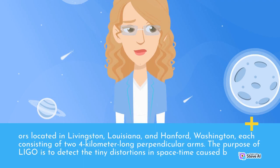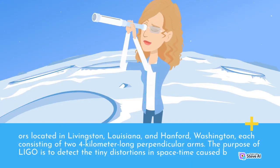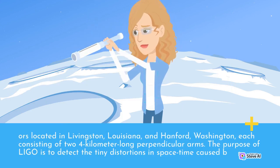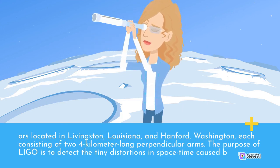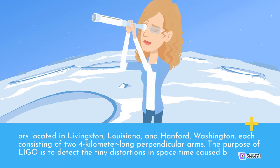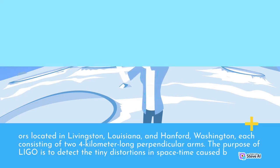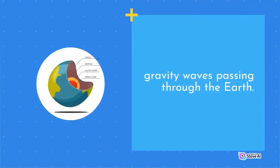LIGO consists of two 4-kilometer-long perpendicular arms. The purpose of LIGO is to detect the tiny distortions in spacetime caused by gravity waves passing through the Earth.